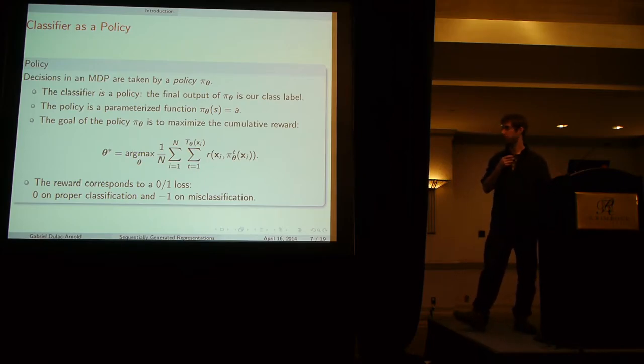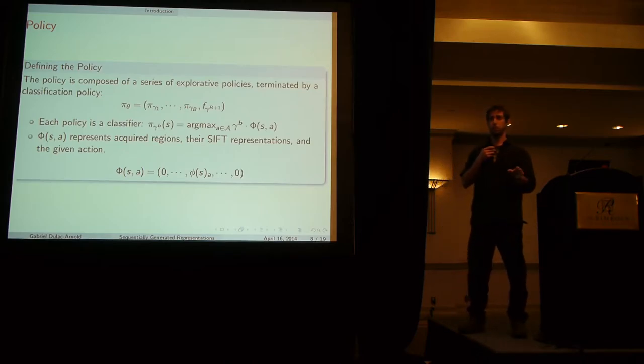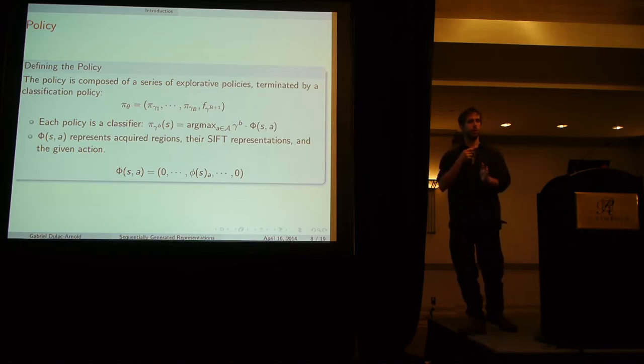In our particular case where we have a fixed budget, we choose to use a slightly more funky policy. We actually have these sub-policies. For each stage in the selection process, we have a new sub-policy. Like that, these sub-policies can specialize. Since they're linear, they'll be able to work better on their specific stage in the classification process.